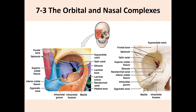Let's talk about the orbital complex. The walls have different compositions: the superior part is made by the frontal bone, including the supraorbital margin and supraorbital notch. The posterior part is made by the sphenoid bone, which contains important structures including the optic canal — through which the optic nerve passes — the superior orbital fissure, and the inferior orbital fissure.